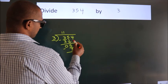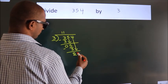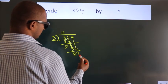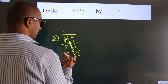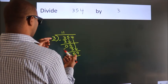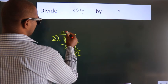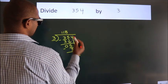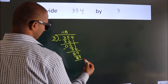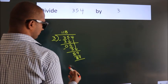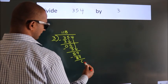After this, bring down the beside number. So 4 comes down, giving us 24. When do we get 24? In the 3 table, 3 eights are 24. Now we subtract. We get 0.